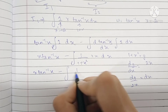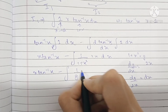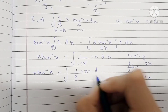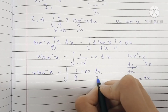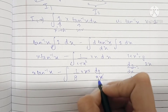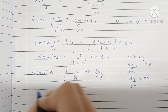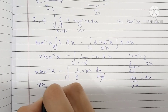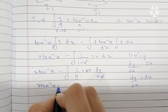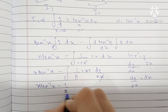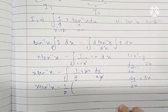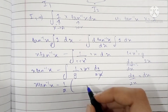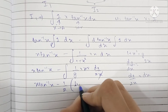So we have x · tan⁻¹(x) − ∫(1/g) · x · dg/(2x). The x's cancel and we can take 1/2 outside as a constant. The integration of 1/g with respect to g is log g.